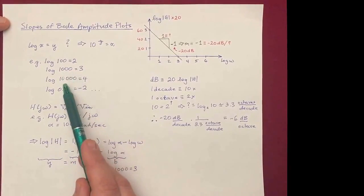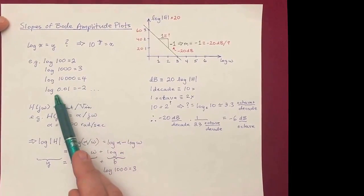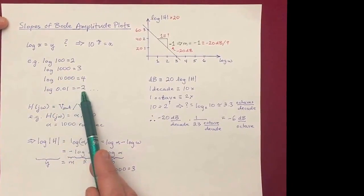Similarly, the log of 1,000 is 3, the log of 10,000 is 4, the log of 0.01 would be minus 2, and so on.